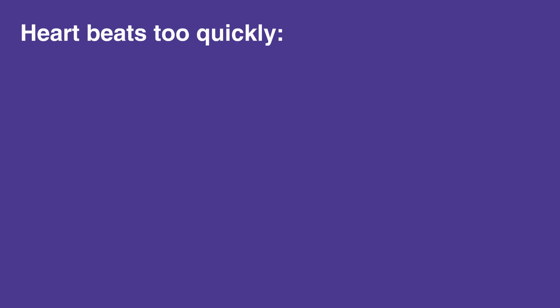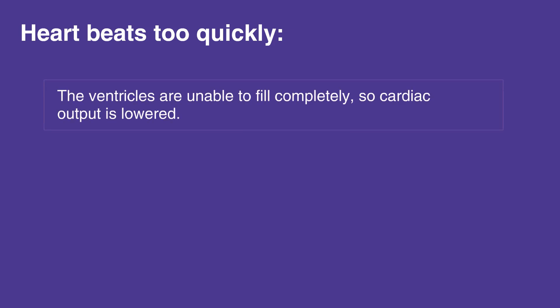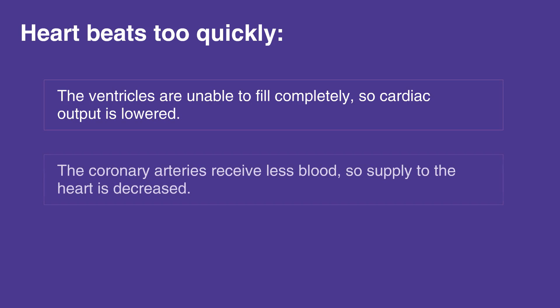When the heart beats too quickly, there is a shortened relaxation phase, which causes two main problems. The ventricles are unable to fill completely, so cardiac output is lowered, and the coronary arteries receive less blood, so supply to the heart is decreased.